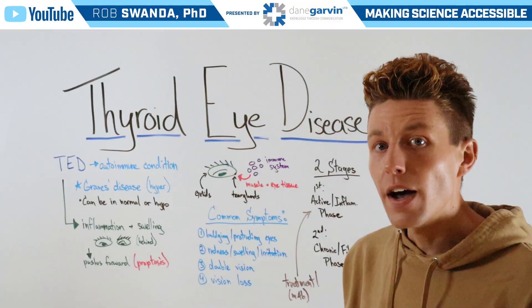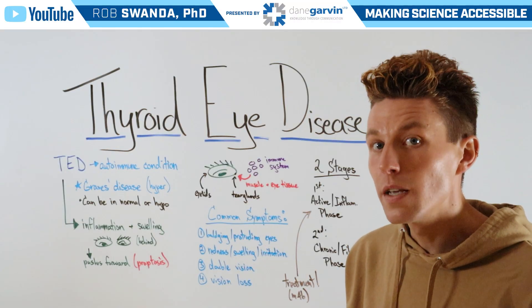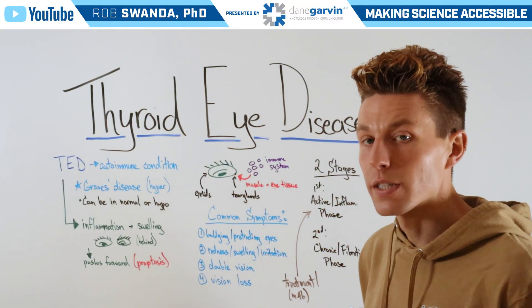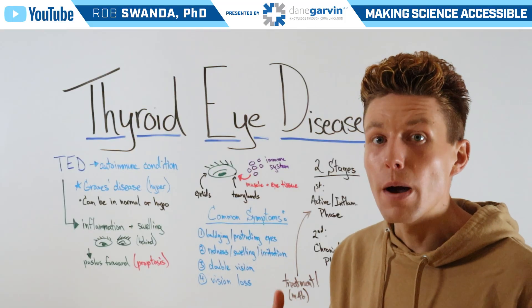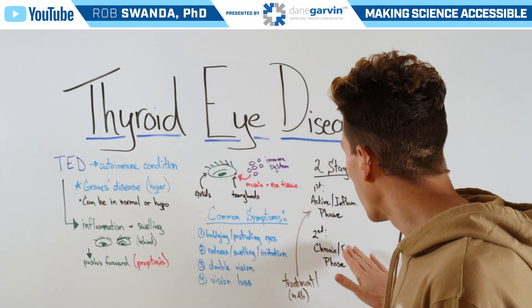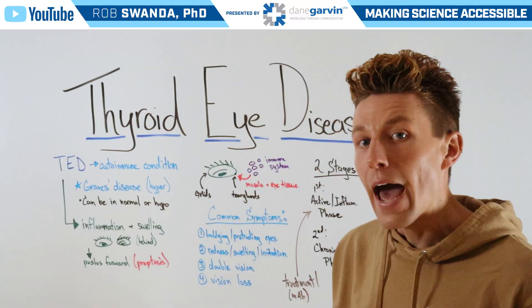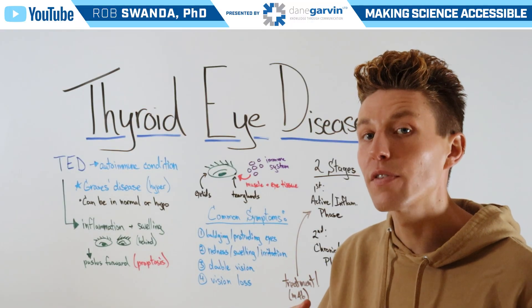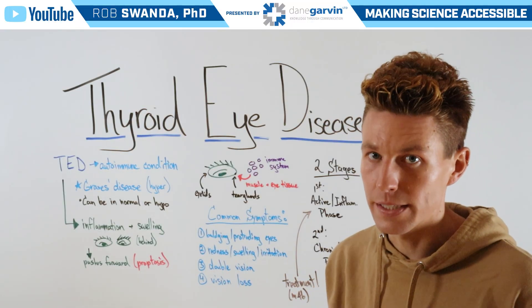TED is classified into two main categories. The first is an active or inflammation stage, and that can persist for about two years. The second is a chronic or fibrotic phase, and that's after that inflammation and redness has subsided; however, the bulging of the eyes still continues.